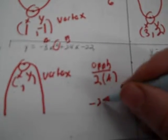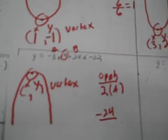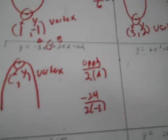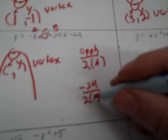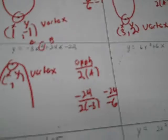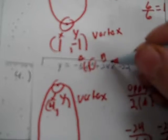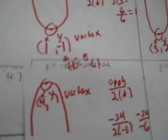To find x, we use the same formula: opposite of b divided by 2 times a. The opposite of positive 24 is negative 24, and then 2 times negative 3 is negative 6. So negative 24 divided by negative 6 gives me positive 4. I put 4 in for x, and to find y I replace all my x's in the equation with 4, and I get 26. So the vertex is (4, 26).